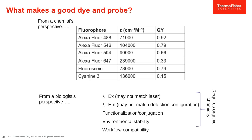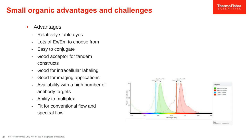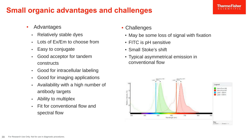Developing new dyes requires a partnership between chemist and biologist. Advantages of small organic dyes include relative stability, many excitation and emission profiles to choose from, ease of conjugation, suitability as acceptor dyes for tandem constructs, effectiveness for intracellular labeling and imaging applications, availability with many antibody targets, ease of multiplexing, and compatibility with both conventional and spectral flow cytometry. Challenges include possible loss of signal with fixation, pH sensitivity of important dyes like FITC, and typically small Stokes shift with asymmetrical emission.